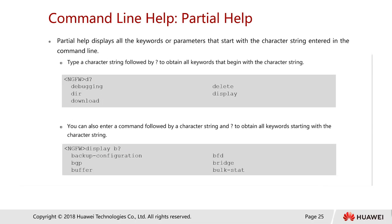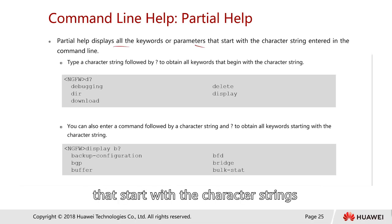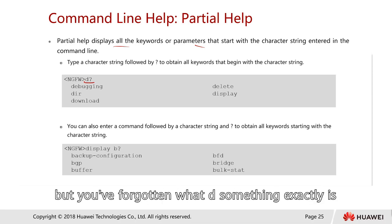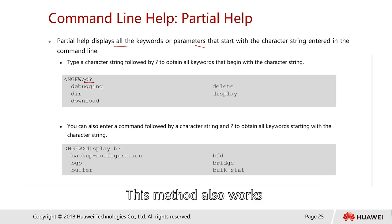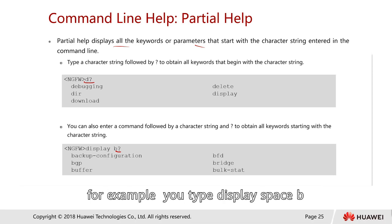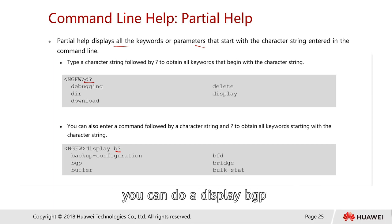We also have something called partial help, which displays all keywords and parameters that start with the character strings entered in the command line. For example, if you've forgotten a command starting with 'd', you can type 'd?' to find all commands starting with 'd'. This method also works at the parameter level — for example, type 'display b?' to find commands like 'display bridge', 'display bgp', or 'display bfd'.